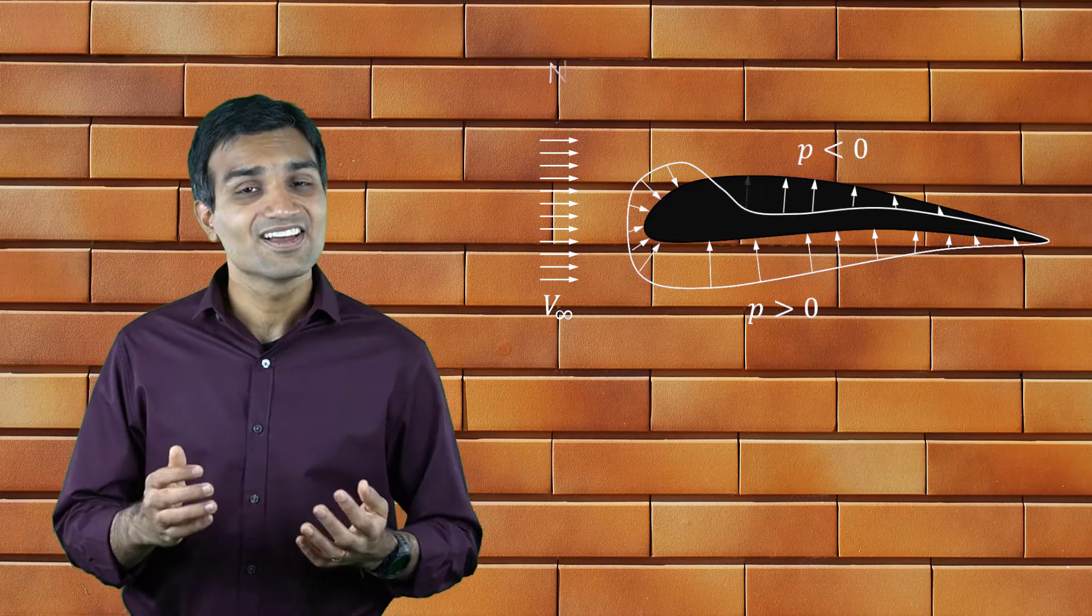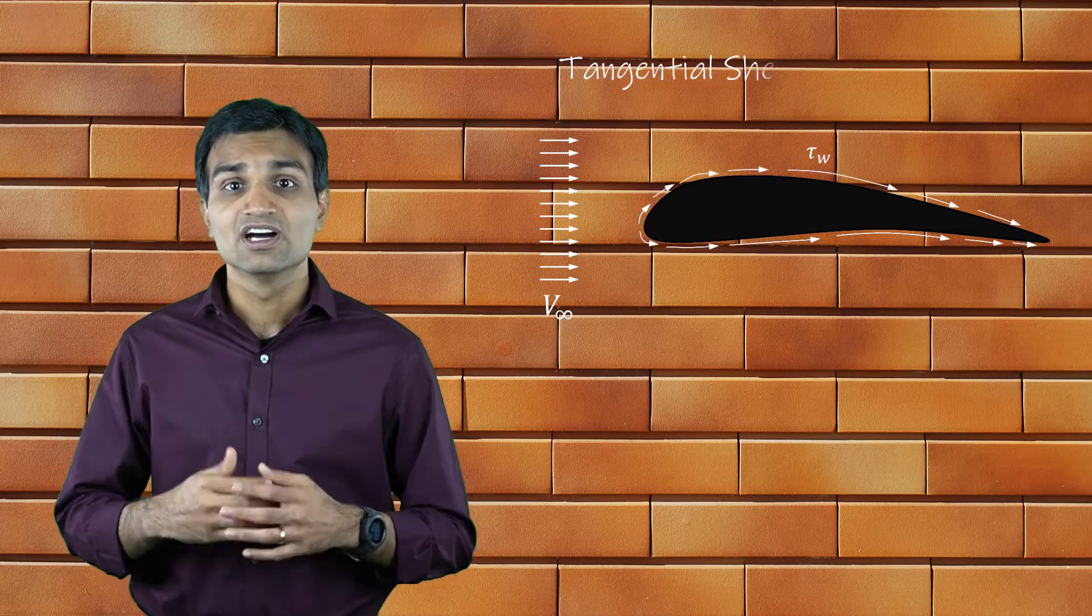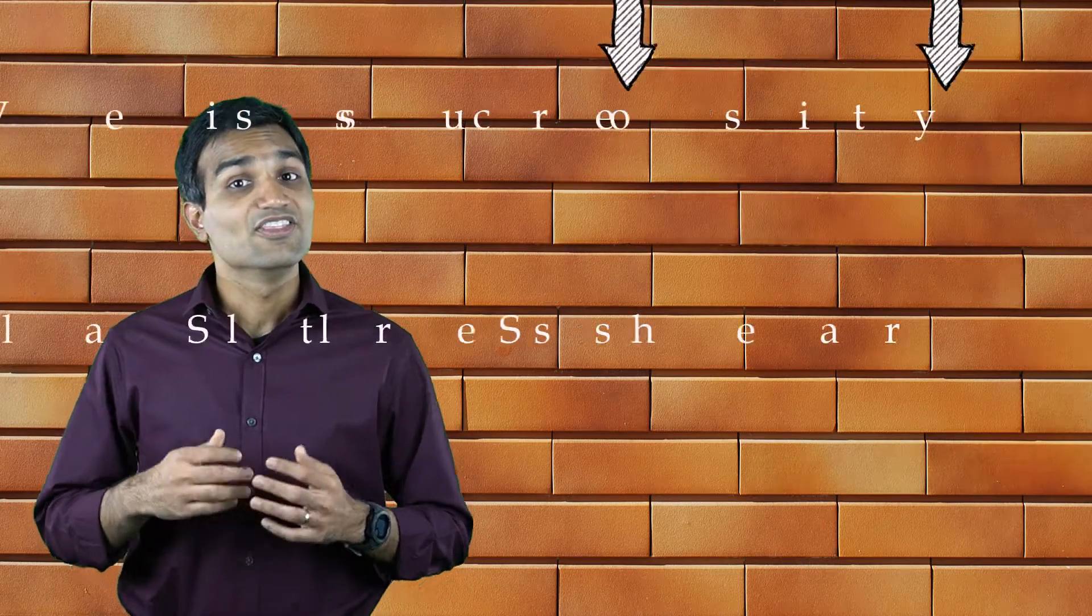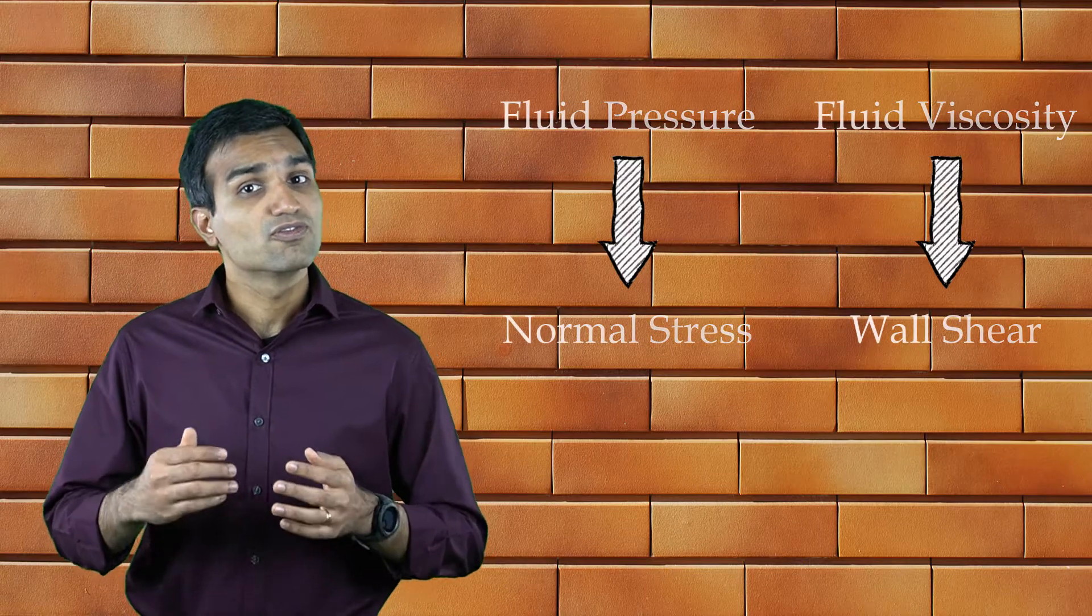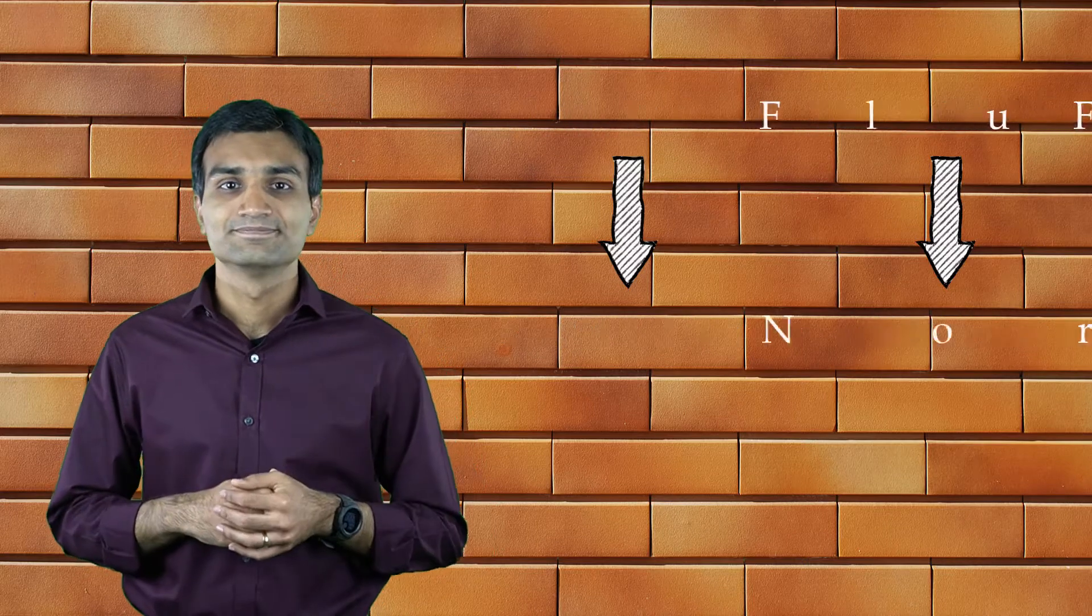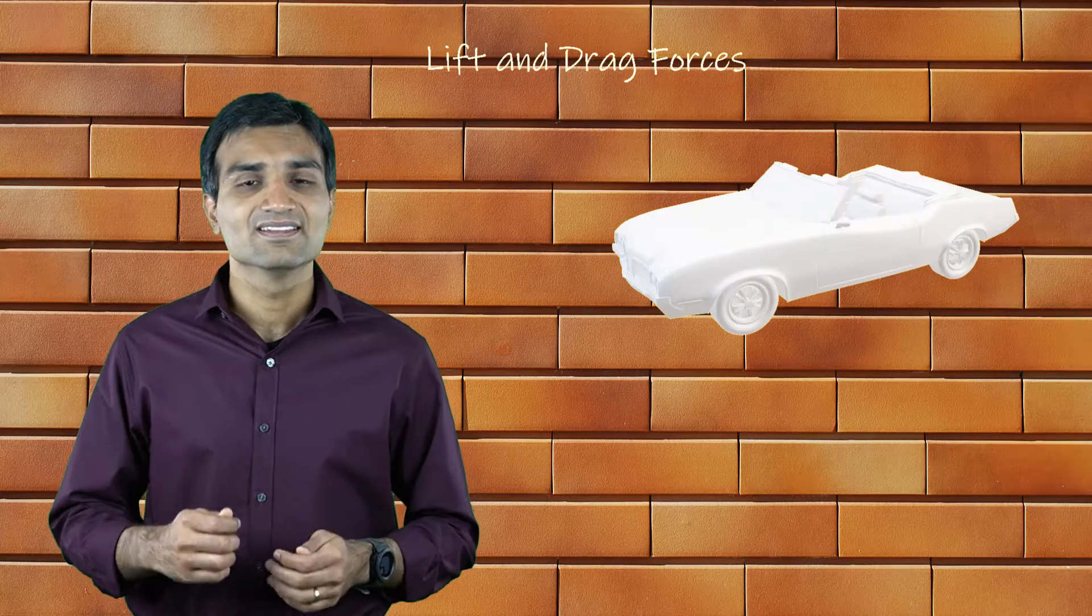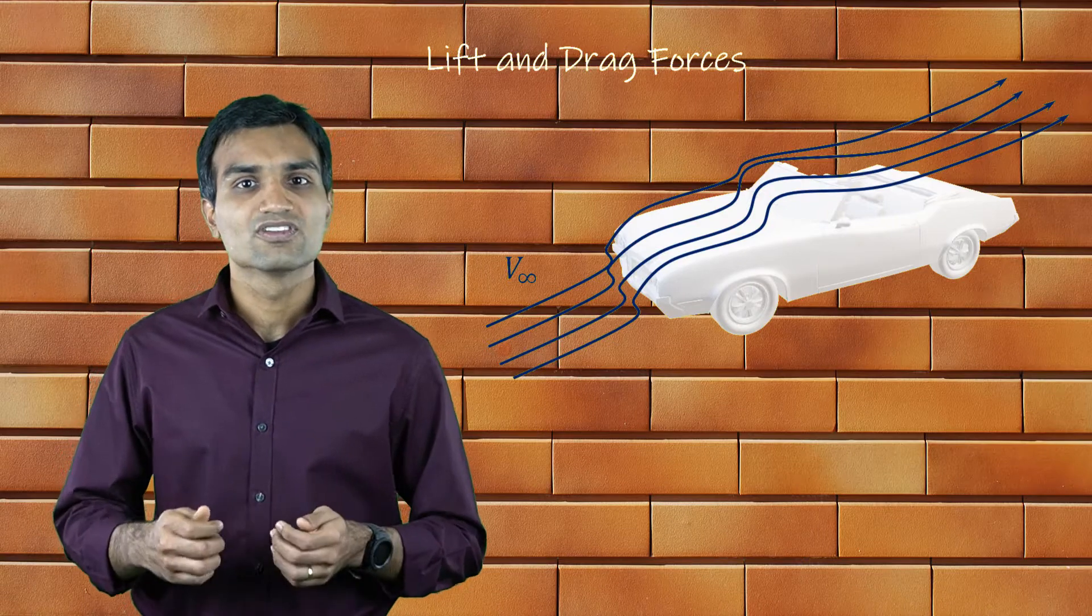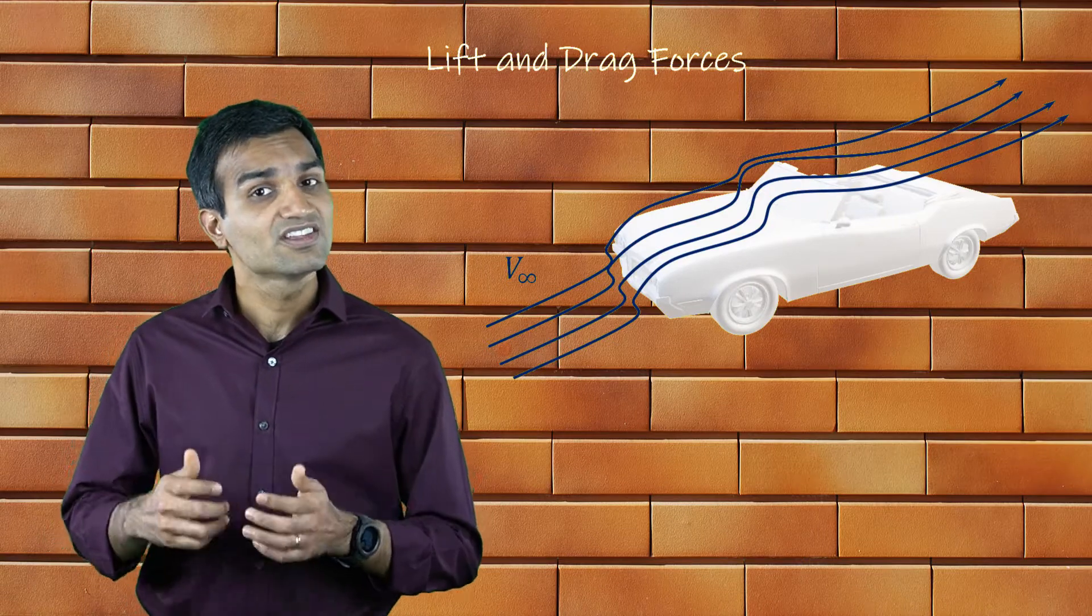Engineers study external flows to understand the distribution of forces acting on a solid body. These forces are a result of both normal pressure as well as tangential shear applied by the fluid. The normal stress is because of fluid pressure and wall shear is due to fluid viscosity. These individual contributions can be combined to obtain the total resultant force acting on this external body. The resultant force is described by two distinct components.